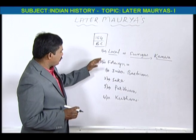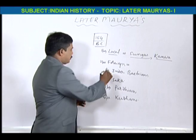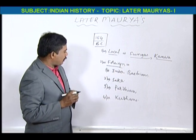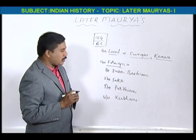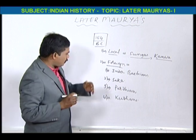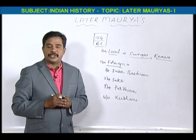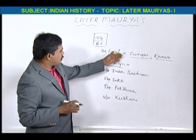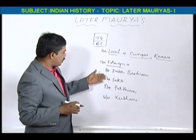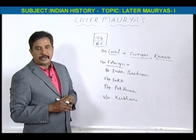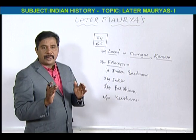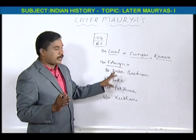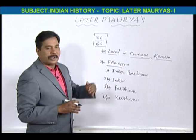So many people will have doubt about what was the political condition and situation in North India after the decline of the Mauryas. In total, North India was occupied by these local and foreign kingdoms. Now we can go through them one by one.